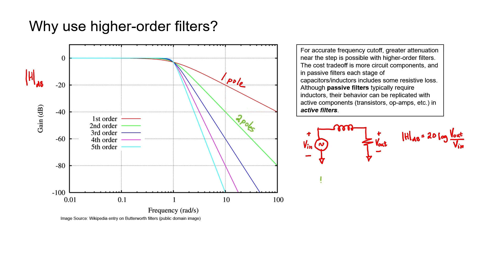Maybe a one-pole filter is not enough to meet our needs. What if I had a signal I needed to pass through the system, but needed to block a signal at a higher frequency? A one-pole filter is not as good as a two-pole filter. Although a one-pole filter is supposedly a low-pass filter, the high frequencies are not completely blocked — they're just attenuated. A two-pole filter has more attenuation, so if you need more blocking of higher frequencies, you have to use more poles.